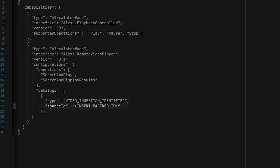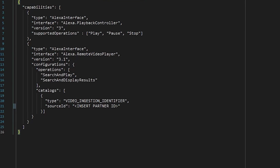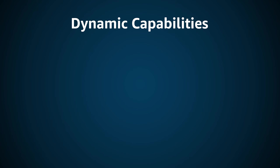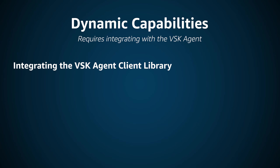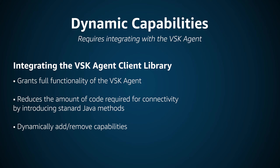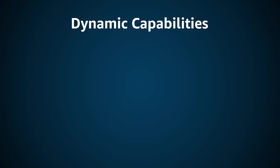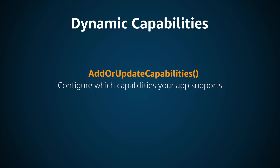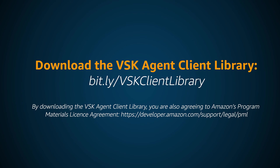Finally, under the catalogs property, update the source ID with your partner ID. Moving on to dynamic capabilities, since we're now going to be handling capabilities based on the user state, we need to integrate with the VSK agent to report those capabilities. We recommend doing this by integrating the VSK agent client library. This approach gives us full functionality of the VSK agent, which reduces the need for writing as much code and allows us to use standard Java methods rather than handling the service connection ourselves. This approach also lets us dynamically add or remove capabilities whenever we want. The two methods you can use for reporting capabilities are add or update capabilities, for configuring which capabilities are supported, and send capability test directive, which is a method for testing your integration.